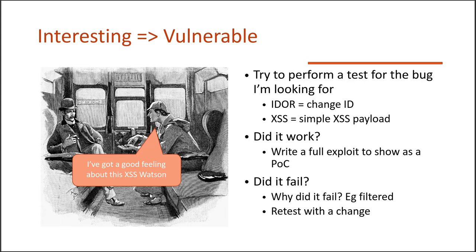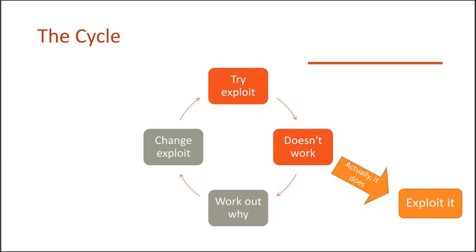So if I've got an ID or BOLA, I'm changing the ID. If I'm looking for injection-type things, I might try a simple XSS payload, asking: does that work? What I do is bug bounty hunting, so it's really important for me to show impact — I need to show exactly how impactful a vulnerability is, because that's how I get paid. Then I ask: did it fail? Am I retesting it, or do I think it's filtered completely? The cycle then changes to: try the exploit, it works, create the full exploit. Understanding impact and presenting the most impactful scenario for a vulnerability is why people get paid to hack things.